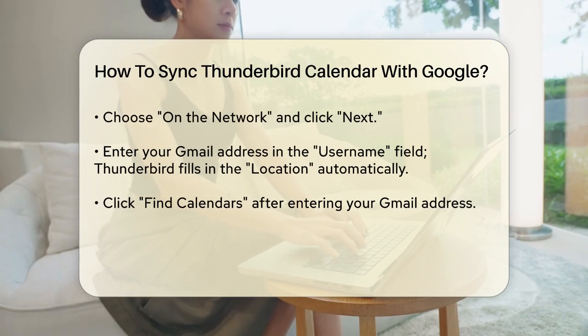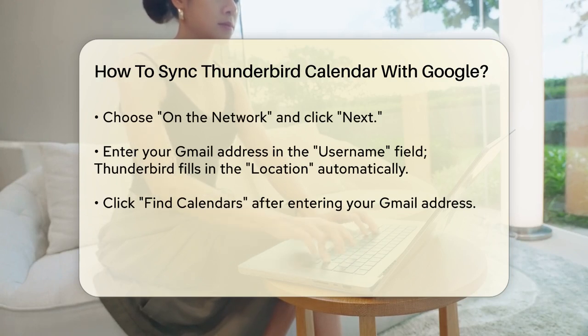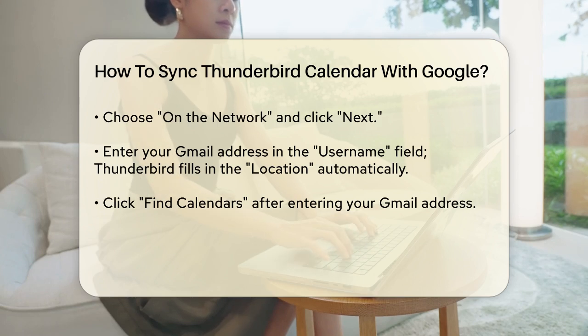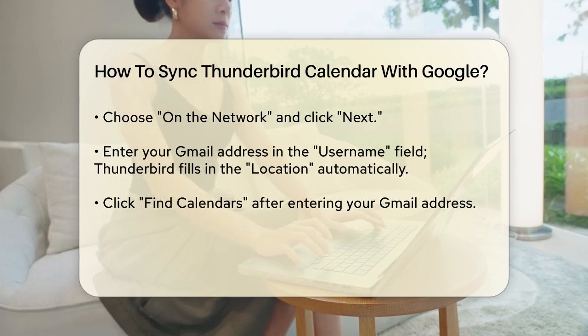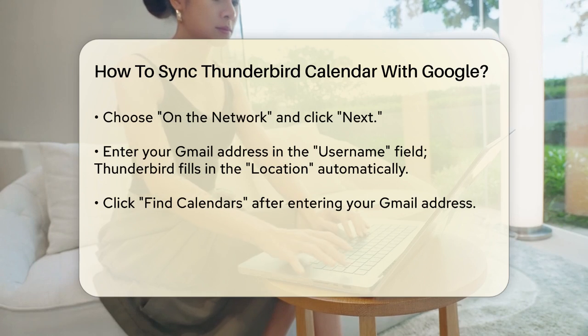Now you'll need to enter your Gmail address in the Username field. Thunderbird will automatically fill in the Location field. Click Find Calendars after you've entered your Gmail address.